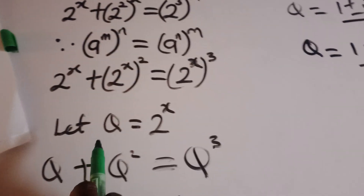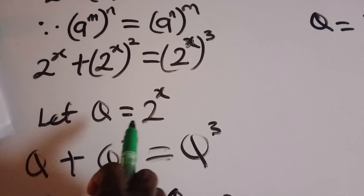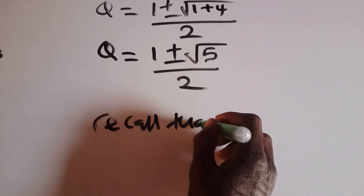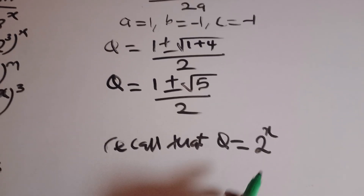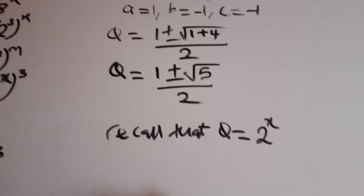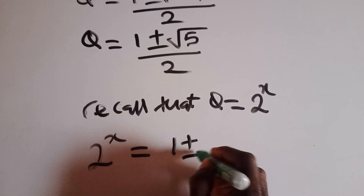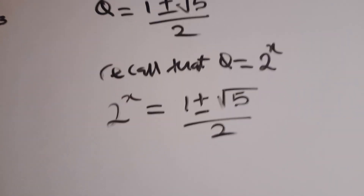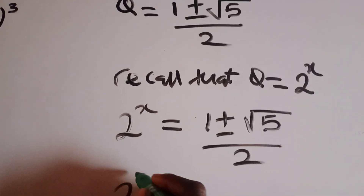Now we recall that q is equal to 2 raised to the power x. Substituting back, we have 2 raised to the power x equals (1 plus or minus square root of 5) divided by 2. Since 2 raised to the power x must be positive, we take the positive root: 2 raised to the power x equals (1 plus square root of 5) divided by 2.